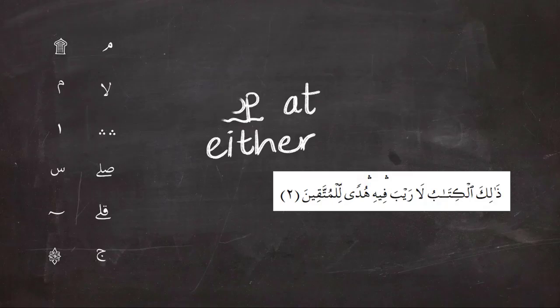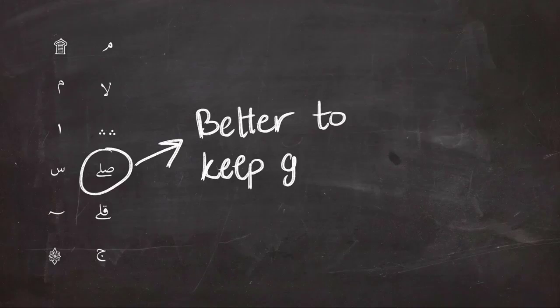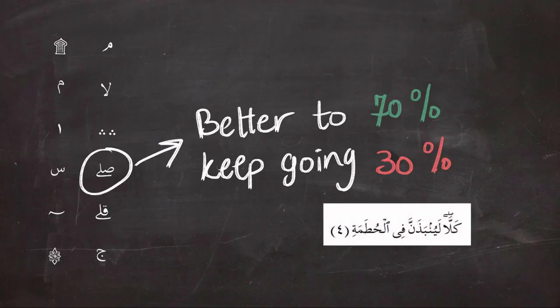Next is the symbol that looks like the word Sil, which means you better keep going. We could compare it to 70% go, 30% don't go. It means it's better to keep reading, like in the example.